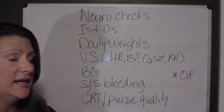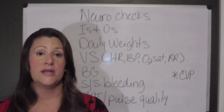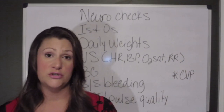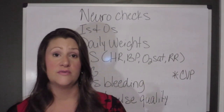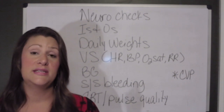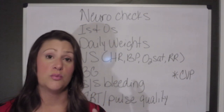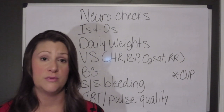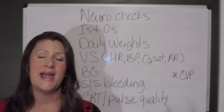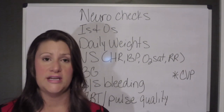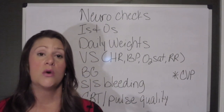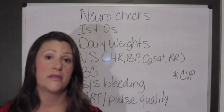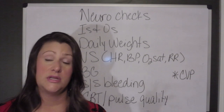One important hemodynamic measurement for every single type of shock is central venous pressure, or CVP. You can obtain CVP through the distal port of a triple lumen central line. It gives us a direct reflection of the pressure in the right side of the heart, also known as preload. CVP measurements — which we like to keep between 8 and 12 — are going to guide our fluid replacement and tell us whether fluid replacement is adequate, whether the patient needs more fluid, or whether we are over-hydrating the patient.